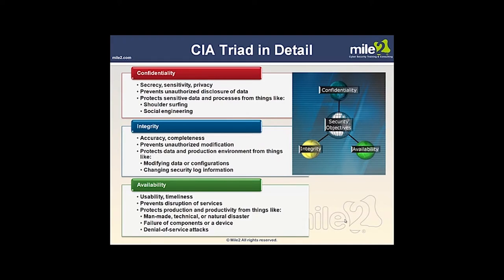A bit more on confidentiality — secrecy, sensitivity, privacy, it prevents unauthorized disclosure of data and protects sensitive data from things like shoulder surfing, where a bad guy looks over your shoulder watching what you type or seeing your screen. Preventative measures include paying attention to who's near you or using a screen filter. Social engineering involves manipulating people through friendliness, intimidation, or email to get information they should not have given up. Encryption is super popular for confidentiality — you see it through virtual private networks, and internally to protect against sniffing.